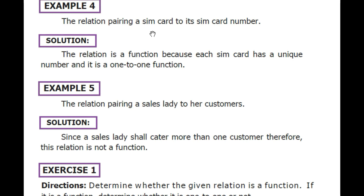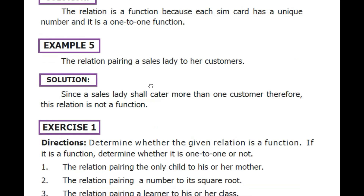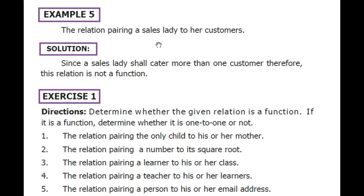Example 4: The relation pairing a SIM card to its SIM card number. The relation is a function because each SIM card has a unique number, and it is one-to-one because no two SIM cards share the same number. Example 5: The relation pairing a sales lady to her customers. Since a sales lady caters to more than one customer, the relation is not a function — it is one-to-many. The many-to-one and one-to-one relations are what we call functions.